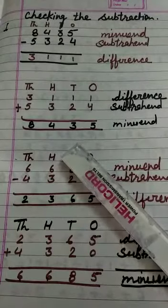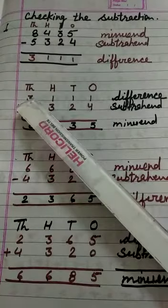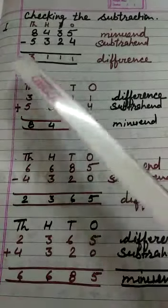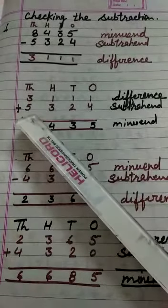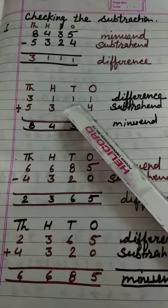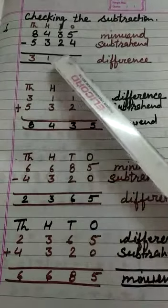Is it clear? Here, this is the difference number, 3,111. This is the subtrahend or smaller number, 5,324.